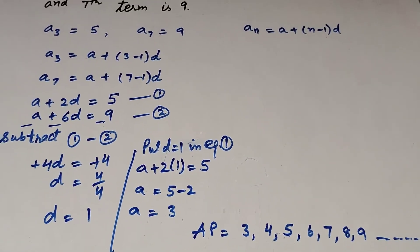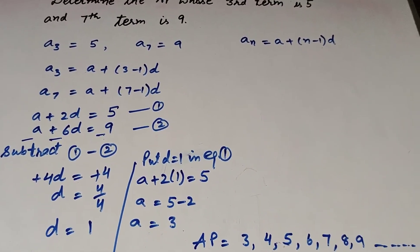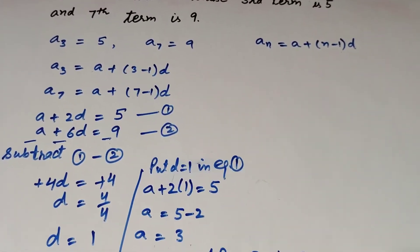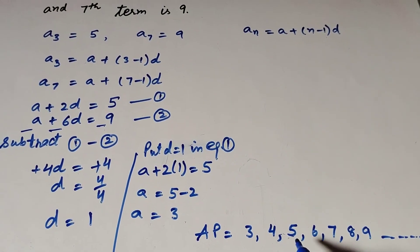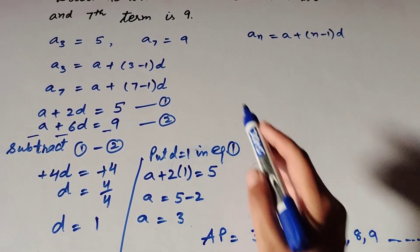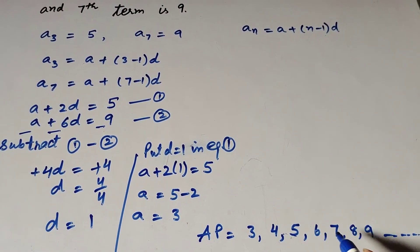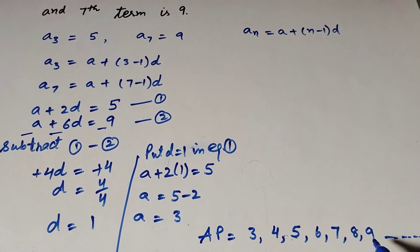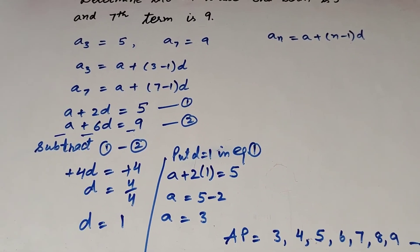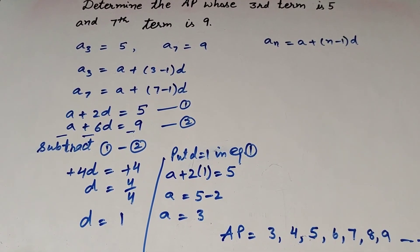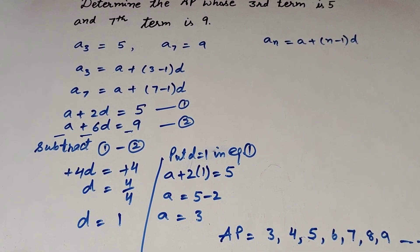This is the required AP series. We can verify: the 3rd term is 5 — counting 1, 2, 3 — yes, the 3rd term is 5. And the 7th term is 9 — counting 3, 4, 5, 6, 7 — yes, the 7th term is 9. Thanks for watching, like, comment and share my video, and subscribe to my YouTube channel.